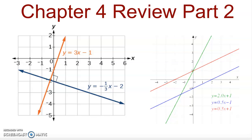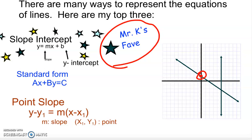This presentation is the second of a two-part review of all the concepts we have talked about in Chapter 4. We're basically working with linear equations and there are different ways to represent them. In the first chapter review, we spent a lot of time talking about slope-intercept form and point-slope form. In this presentation, we're going to be introducing standard form.